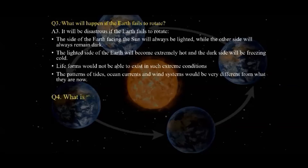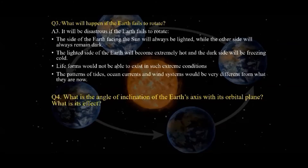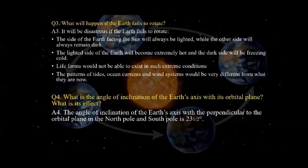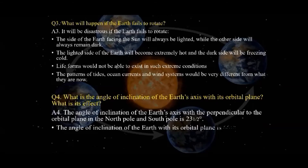Next question: what is the angle of inclination of the Earth's axis with its orbital plane and what is its effect? The angle of inclination of the Earth's axis with the perpendicular to the orbital plane is 23.5 degrees. In other words, the angle of inclination of the Earth with its orbital plane is 66.5 degrees. The orbital plane is the elliptical path of the Earth around the Sun. This tilt causes varying lengths of days and nights and also changing seasons.